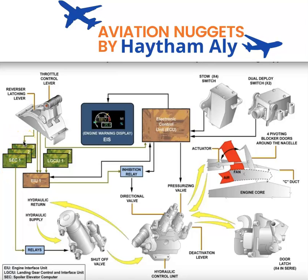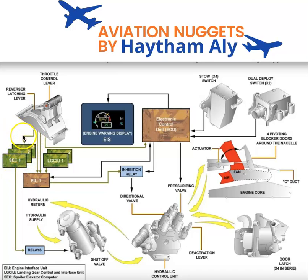The key difference is that the third line of defense is managed by the Spoiler Elevator Computer, which is an airframe system computer, not an engine computer. The ECU and EIU are engine computers for the primary and secondary lines of defense. The third line of defense must be an independent computer — a non-engine computer — to provide true independence.